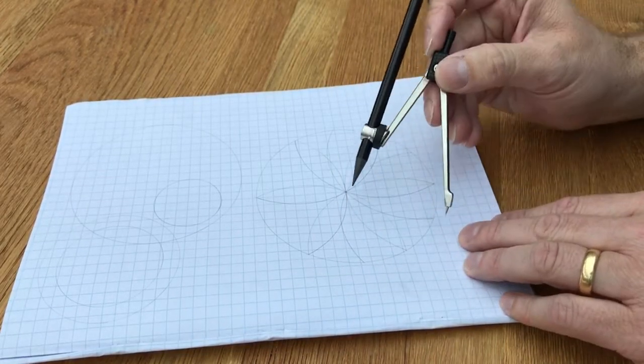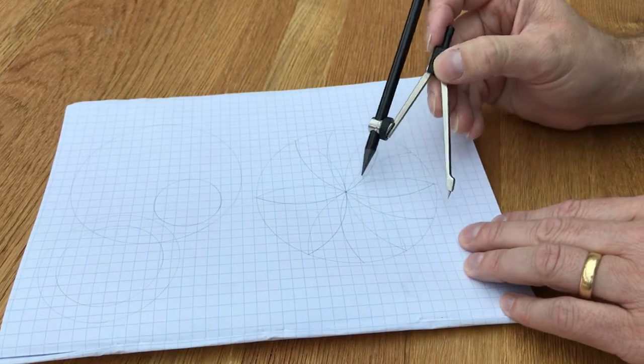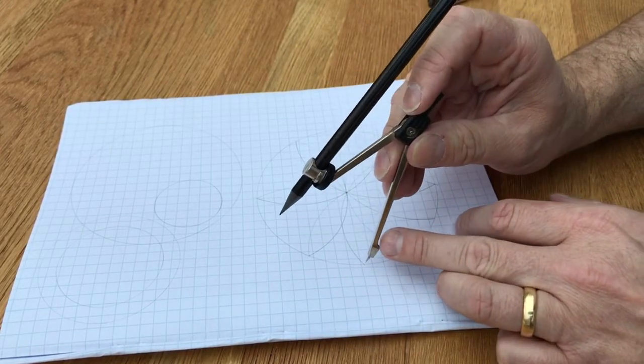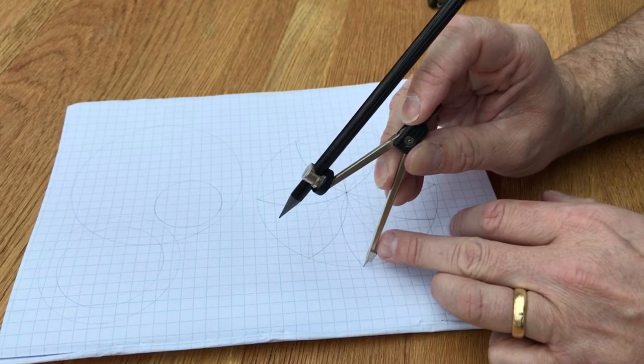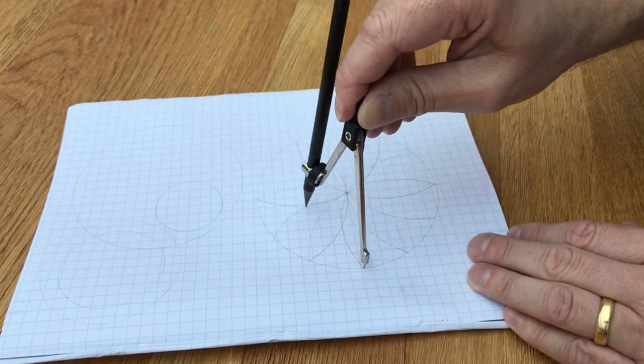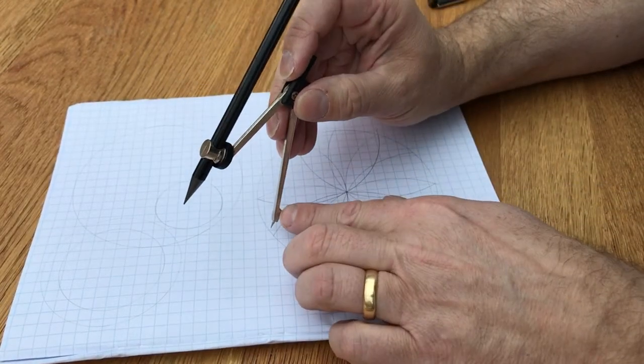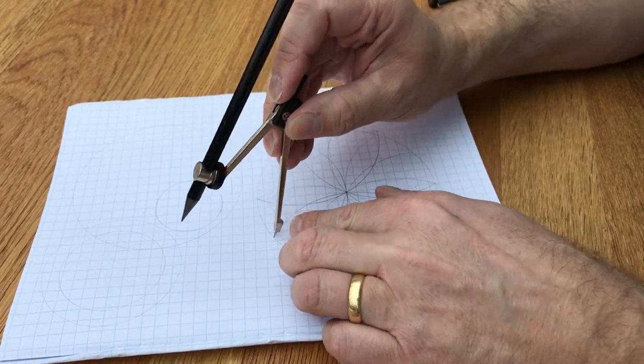You'll notice it creates some really nice spaces in here. They should be all reasonably even, which gives you some lovely geometric patterns to color in. There you go, let's just finish this off.